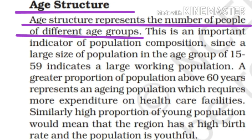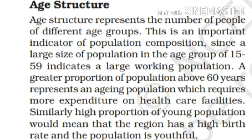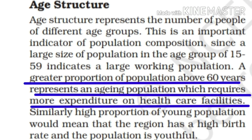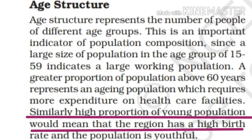The age structure represents the number of people of different age groups and is an important indicator of population composition. A large size of population in the age group of 15 to 59 indicates a large working population. A greater proportion of population above 60 years represents an aging population which requires more expenditure on healthcare facilities. A high proportion of young population would mean that the region has a high birth rate and the population is youthful.